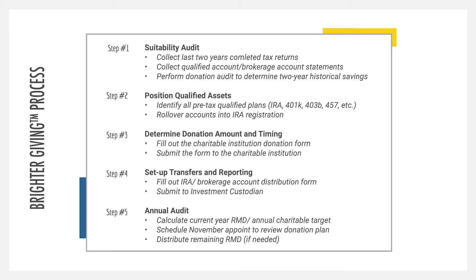Also inside of step two: if you're going to do an in-kind donation, you need to make sure that's in a brokerage account, not a retirement account. Step three is determining the donation amount and timing. If you've gotten this far, you've identified yourself as charitably inclined and there are one or a few charitable institutions you want to donate to. Identifying who those institutions are and how much you'd want to give, either monthly or annually, is the first part of this step.